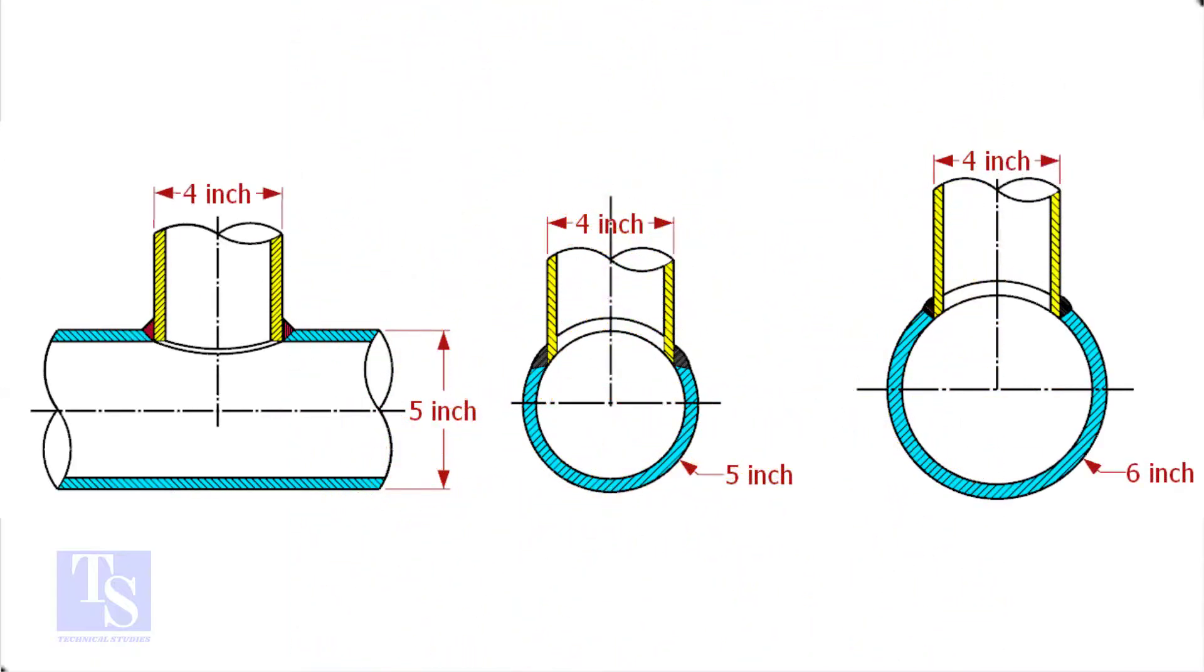In the case of stub-in connections, the branch pipe size is one or more units less than the header size. Suppose both the header and the branch size are the same, a stub-in connection is not possible.